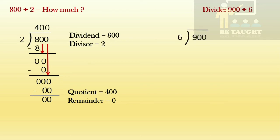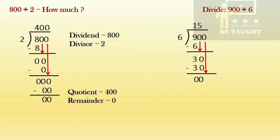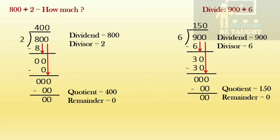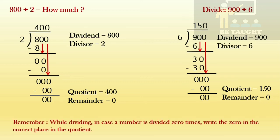Next example: divide 900 by 6. Nine will go in the six times table — six ones are 6, nine minus six is 3. Bring the zero down; 30 will go in the six times table — six fives are 30, zero minus zero is 0 and three minus three is 0. Bring the remaining zero down — six zeros are 0, zero minus zero is 0. Dividend = 900, divisor = 6, quotient = 150, remainder = 0. Children must always remember: when a number is divided zero times, write the zero in the correct place in the quotient, because in division zero also has value.